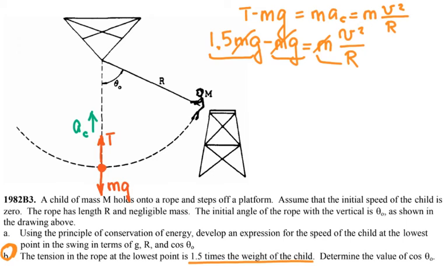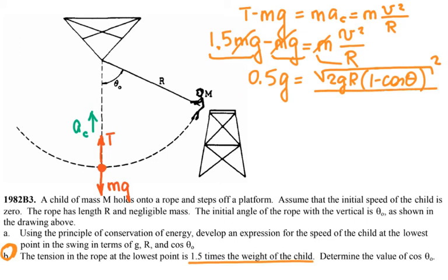And I have 1.5g minus g gives me 0.5g is equal to, the velocity that I just found was, I'm going to plug it in as I found it, and then I'm going to square it, 2gR times 1 minus cosine theta. And then that whole thing is squared and divided by R.